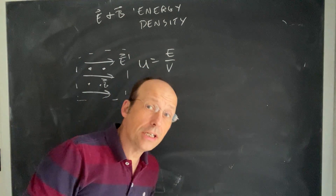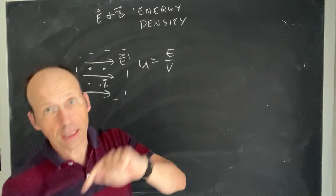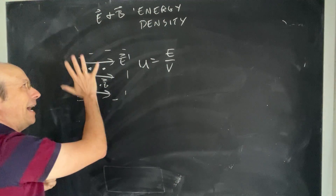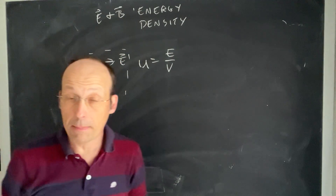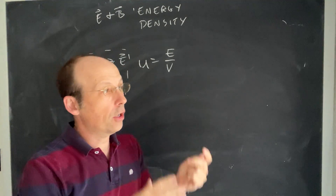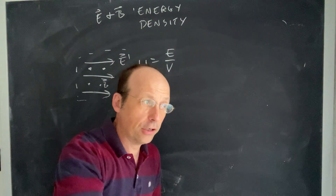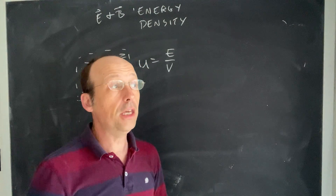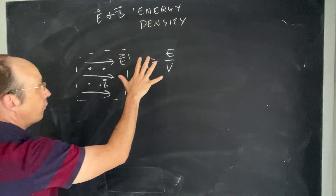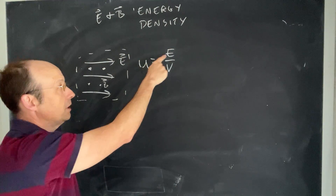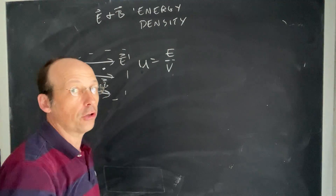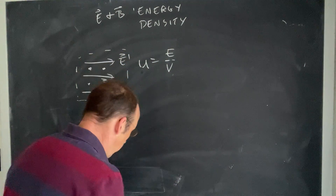Let's derive the energy density for the electric and the magnetic field. Imagine there's some region of space where there's an electric and a magnetic field — it could be a light wave, or it could be a capacitor. If there's an electric field, there's energy stored in the field, and we can describe it as an energy per unit volume. We want to find U divided by the volume, for both the electric and the magnetic fields.